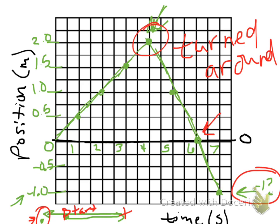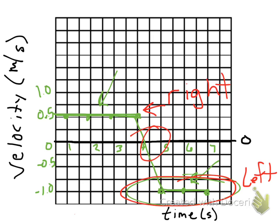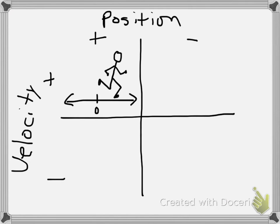One of the easiest ways to look at this is a little graphic called the running man. It looks at whether something is in a positive or negative position, or has a positive or negative velocity. In the first quadrant we have a positive position and a positive velocity. Positive position means he's on the right side of zero and he's moving to the right — this guy is running to the right.